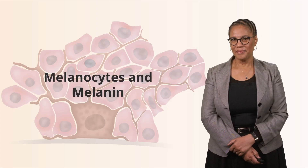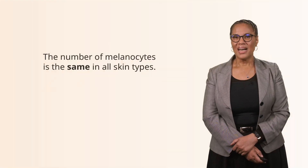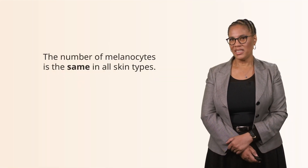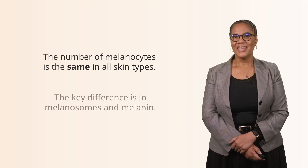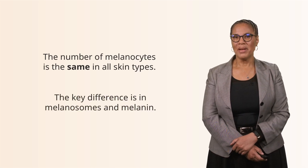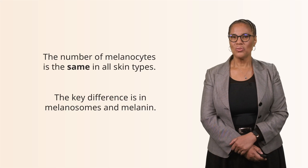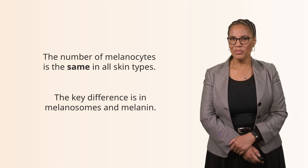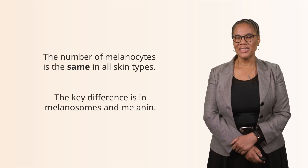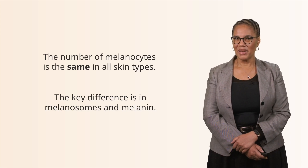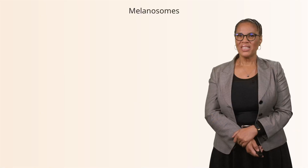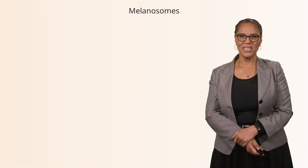The second main difference between melanin-rich and melanin-poor skin is melanocytes and melanin. The number of melanocytes is the same in all skin types. The main difference is in the melanosomes and melanin — physiologically and anatomically the skin is the same, but the difference that gives us our different skin colors comes down to melanosomes and melanin. We will now zoom in on melanosomes to find out what the differences are between the two skin types.